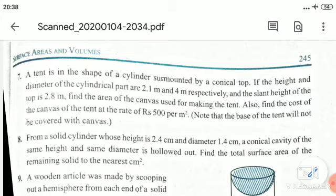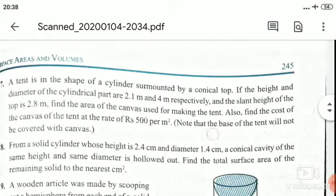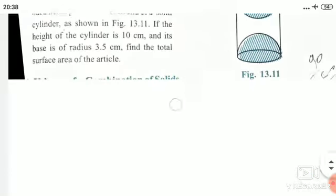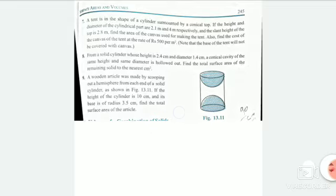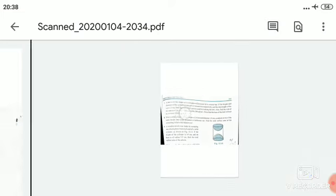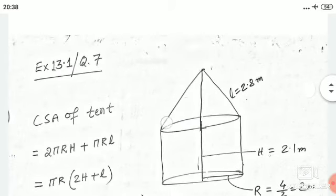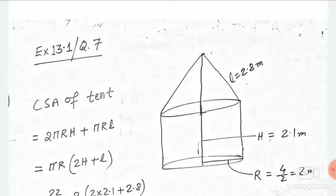Also find the cost of canvas of the tent at the rate of Rs.500 per meter square. This is the height of 2.8 meter. This height is 2.1, radius is 4 by 2, that is 2.